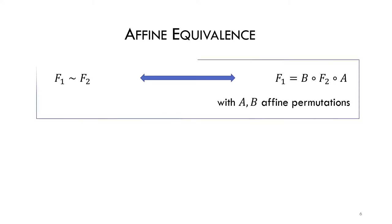The space of S-boxes or Boolean functions is very large, so an important tool is the property of affine equivalence. Two functions are considered affine equivalent if and only if there exist input and output affine transformation permutations that transform one function into the other.